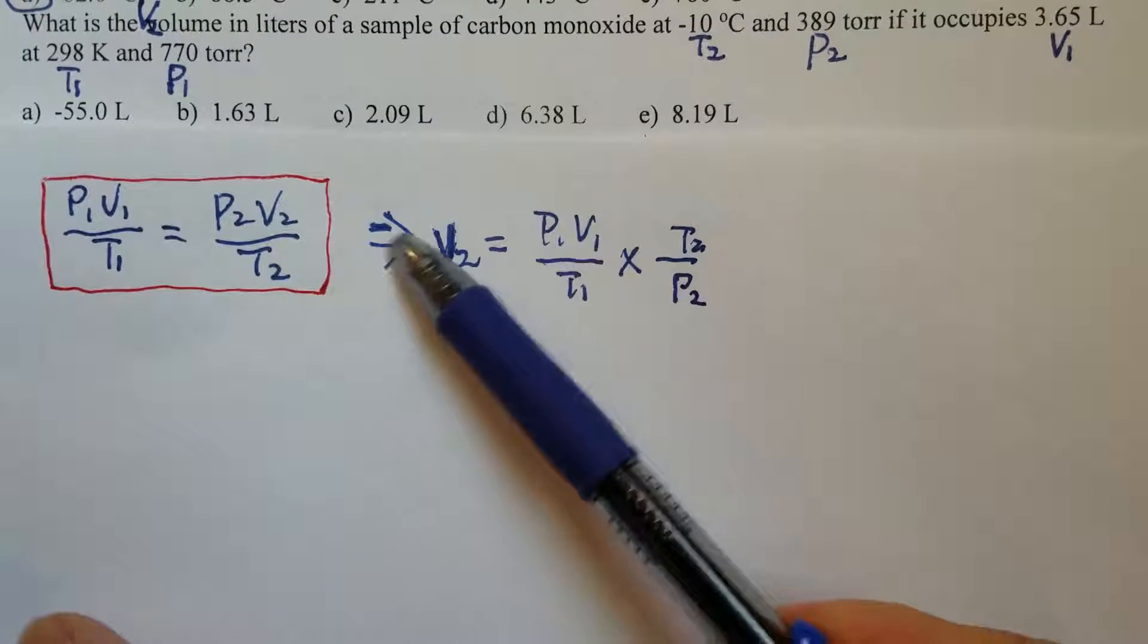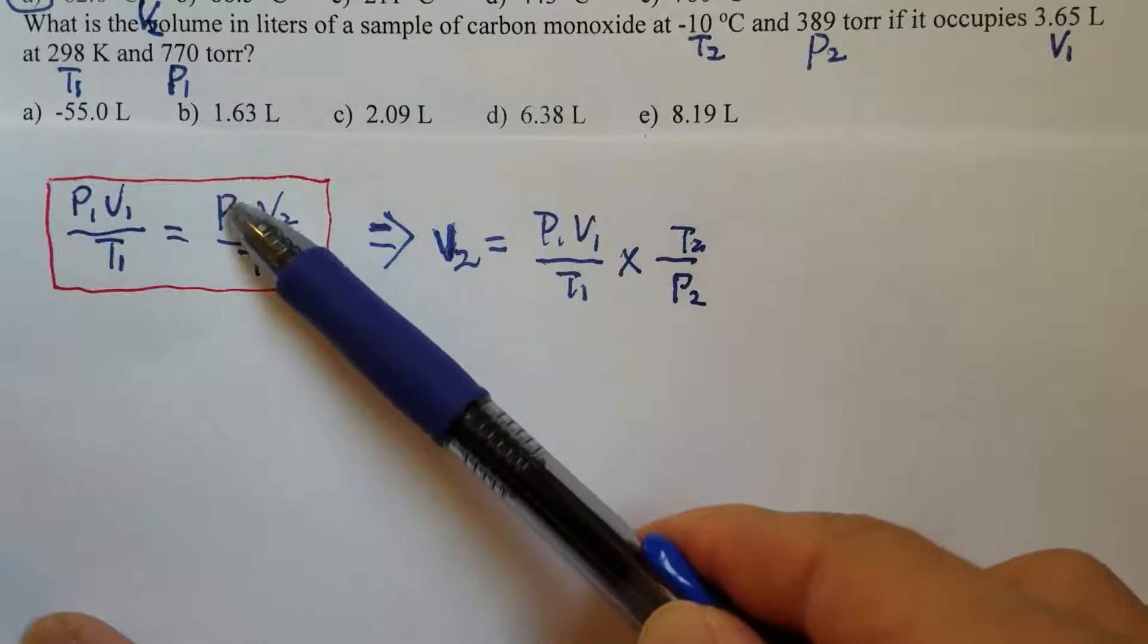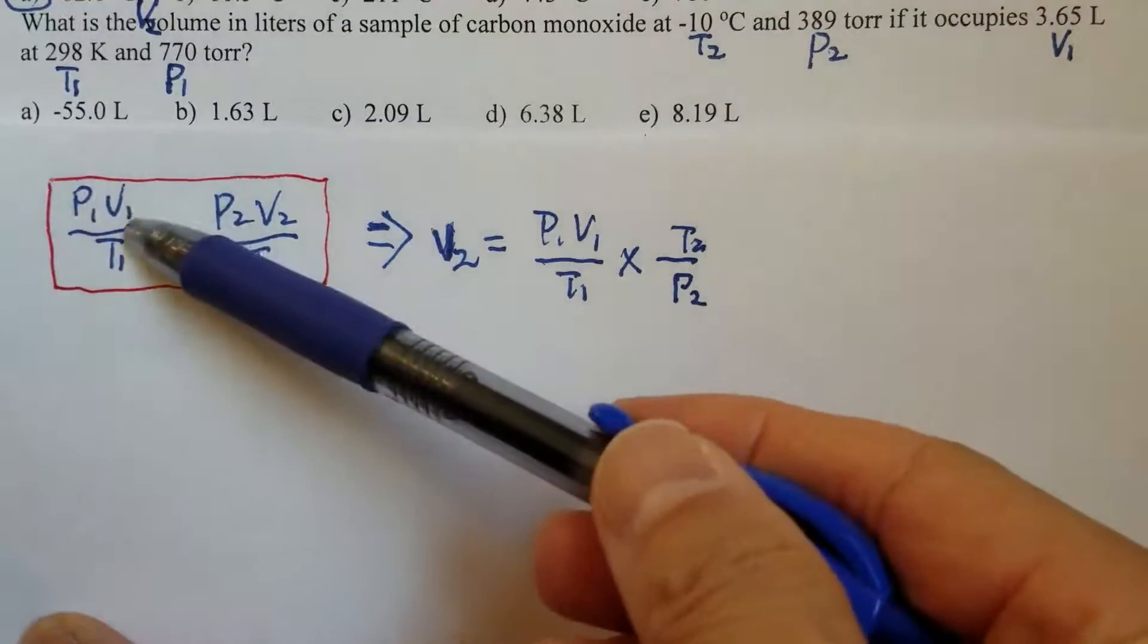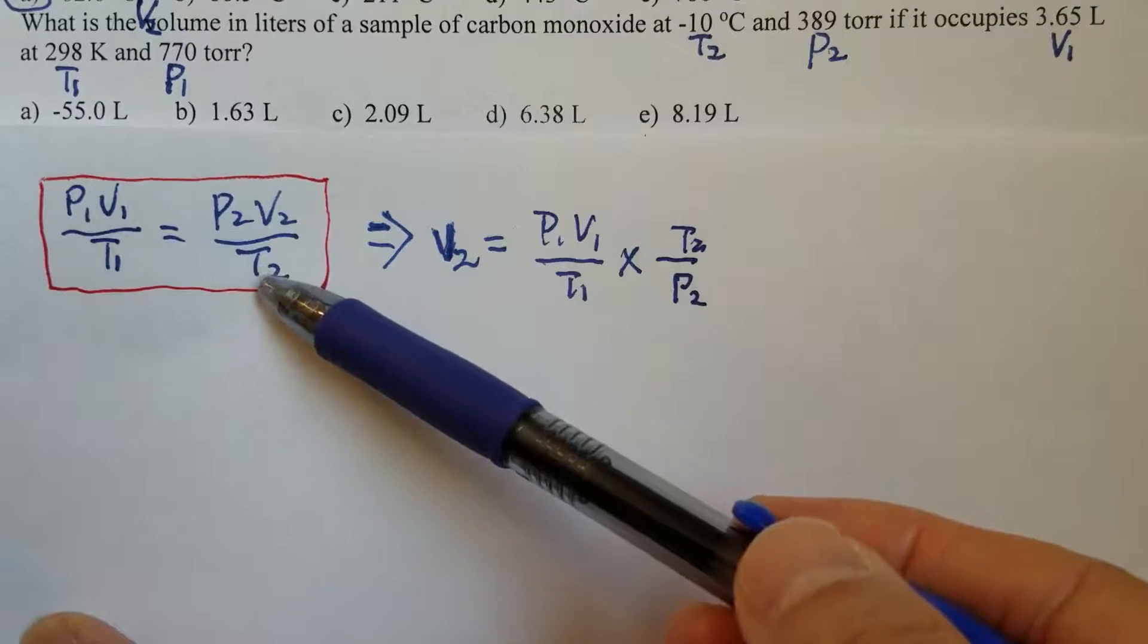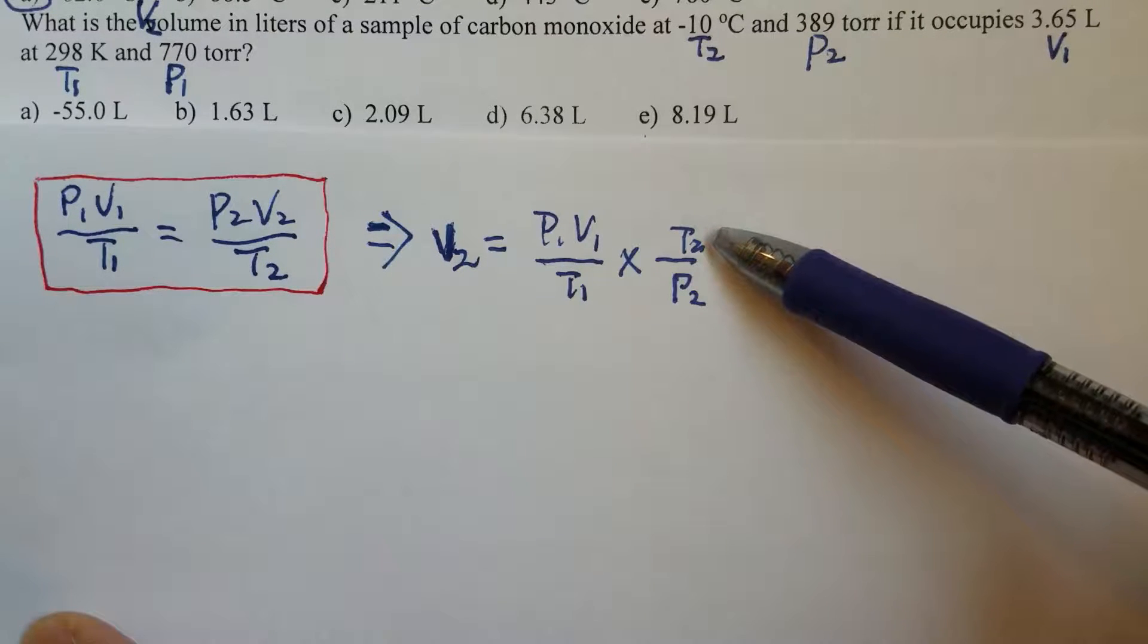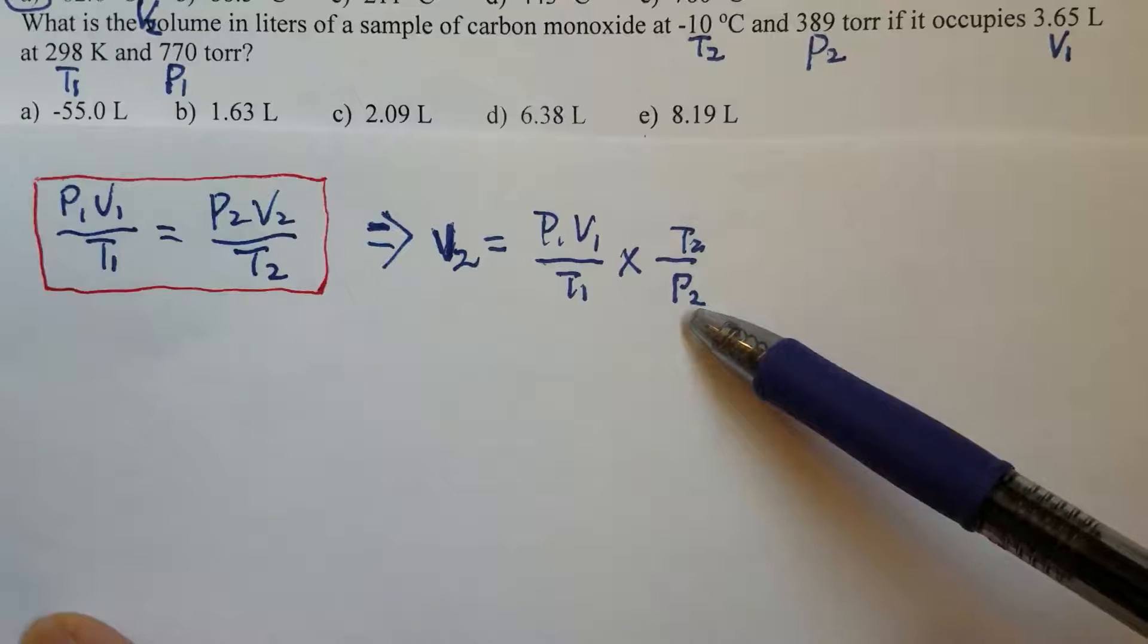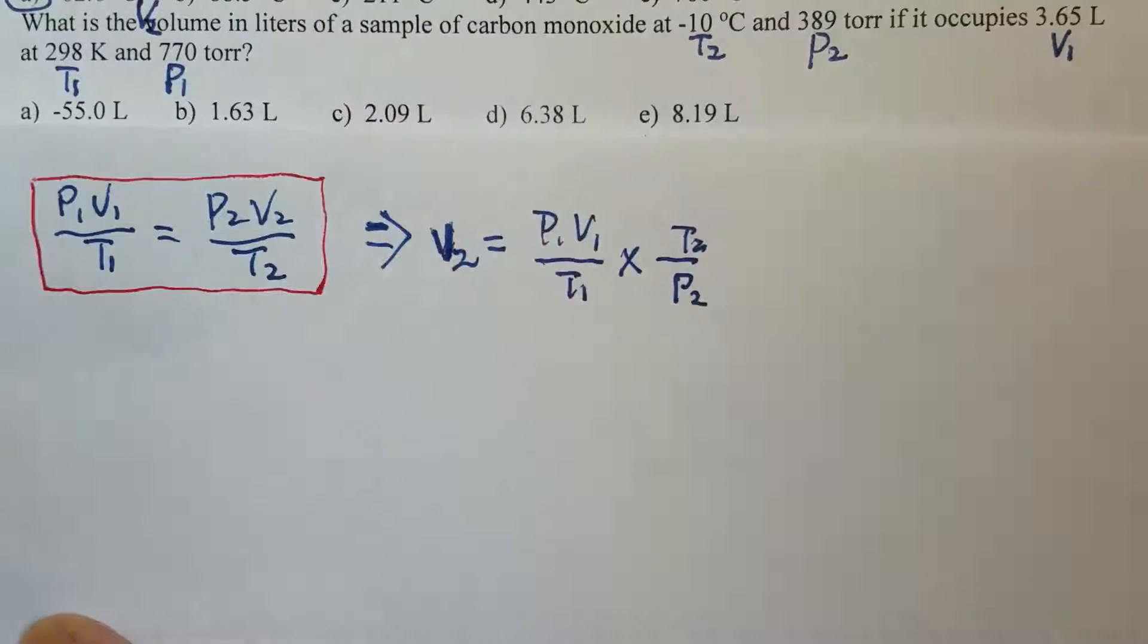Okay, now V2, we just keep V2 here on this side, then we'll move the P2 and the T2 to the other side, and then flip them. So therefore, the P1 V1 over T1 still stays. And then T2 goes to the top as a numerator, P2 goes to the bottom as a denominator. So, now we are ready to calculate the volume, V2.